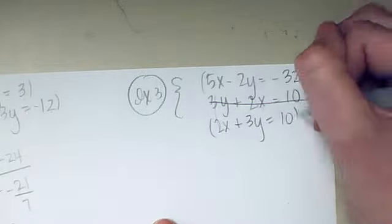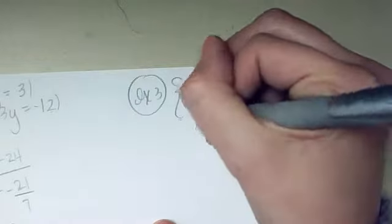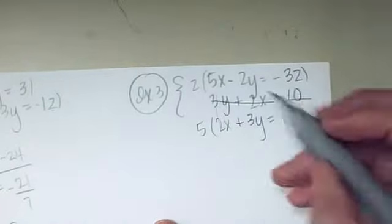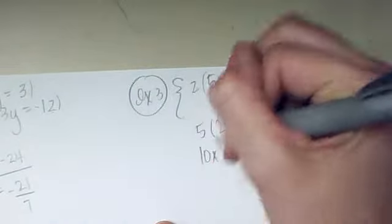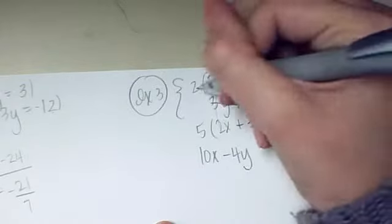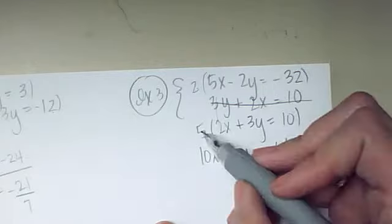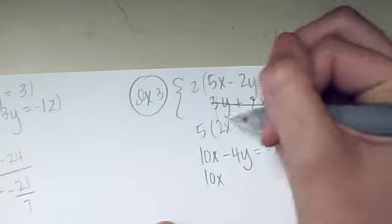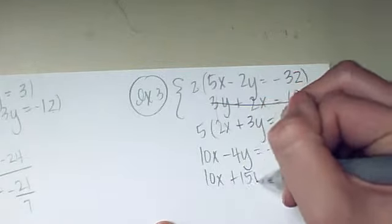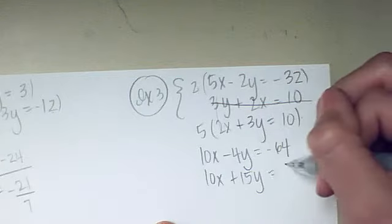There's nothing that cancels automatically. So to get that to work, I'm going to switch these numbers. 5 goes here, 2 goes here. 2 times 5 is 10x. 2 times negative 2 is negative 4y. 2 times negative 32 is negative 64. 5 times 2 is 10x. 5 times 3 is 15y. And 5 times 10 is 50.